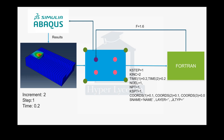After finishing all elements, Abacus has the load results for all integration points and can solve the model for the first increment. Then Abacus moves to the second increment — the time and increment number change — but again it starts from the first element and first integration point, sending data to Fortran and receiving results.